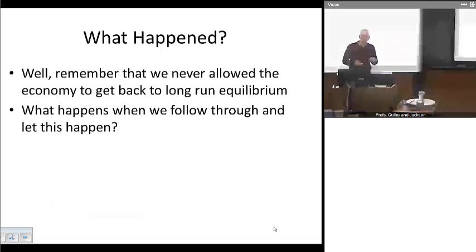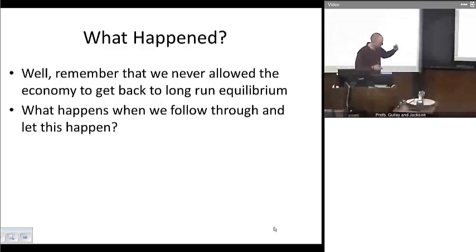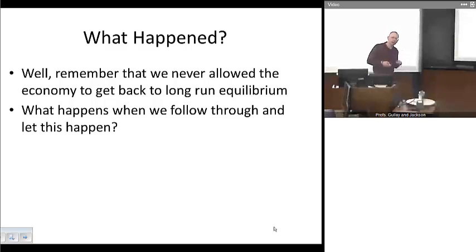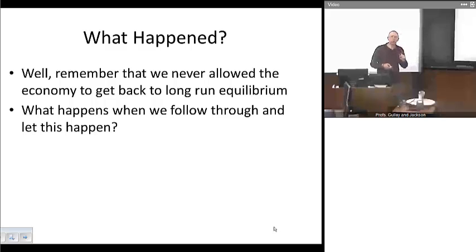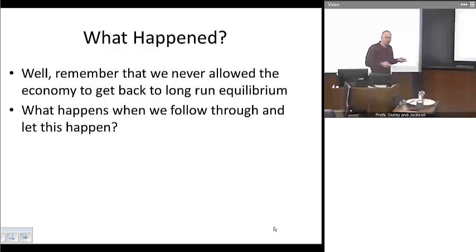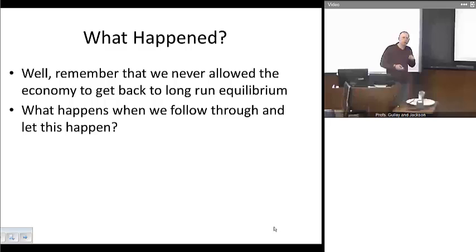So what happened? Why did that seemingly nice, neat relationship between inflation and unemployment suddenly start to break down? Let's go back to our aggregate demand-aggregate supply model. When we set up and derived the Phillips curve, what we didn't do is let the economy go back to long-run equilibrium. We only allowed it to go to short-run equilibrium — that point B. That's how we derived the inverse relationship between inflation and unemployment. Let's follow up and see what happens if we let the economy return back to its normal long-run equilibrium position, which we know that it tends to do.